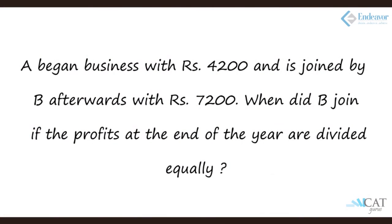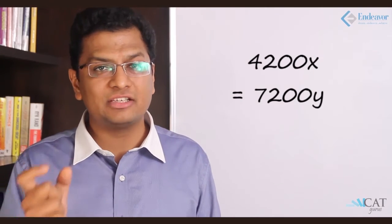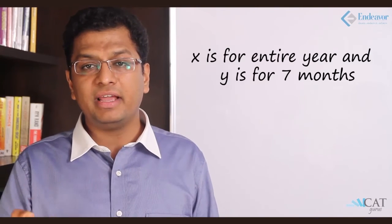A began a business with Rs. 4200 and is joined by B afterwards, but B came in with Rs. 7200. When did B join if the profits at the end of the year are divided equally? Let us say A was in the business for total time X, B was there for total time Y. So 4200×X equals 7200×Y. Why so? Because they are splitting profits equally. Finding the ratio, we get x:y equals 12:7. X equals 12, which means he was there for the entire year, and Y was there for only 7 months. So Y actually joined after 5 months.